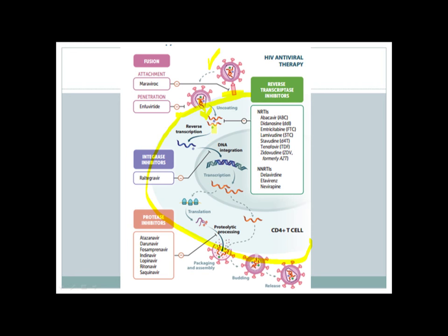Inside the CD4 positive T cell, the RNA of the HIV is converted to DNA by the action of reverse transcriptase. Here you can see two reverse transcriptases converting it into DNA. After being converted to DNA, this DNA gets integrated into the host cell DNA — the CD4 positive T cell DNA — with the help of integrase. Then the DNA inside the CD4 positive T cell undergoes transcription and a lot of viral RNA copies are made.